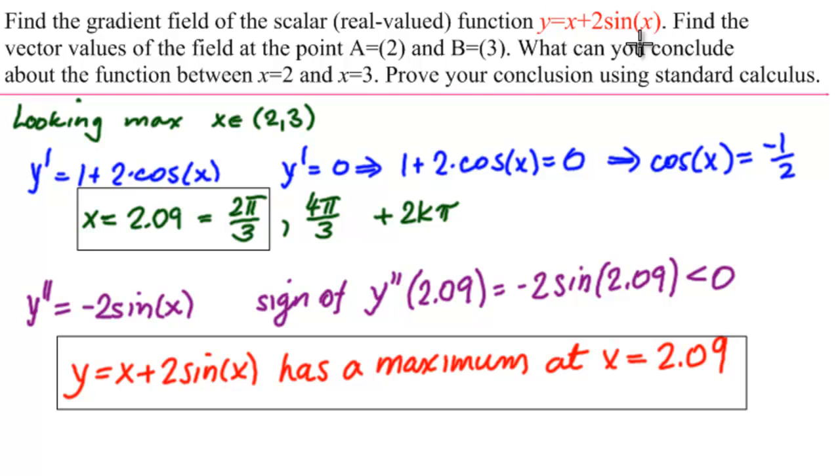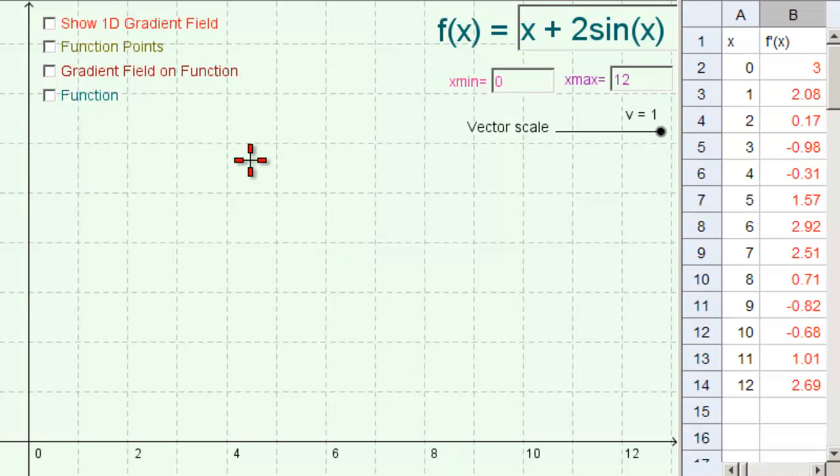So that was using standard calculus. We proved what we found from the gradient field. Now let's see the whole gradient field of this function. So here we have a little applet that will give us the one dimensional gradient field of a real valued function of one variable. Here we've set it up already to be our function, f of x equal to x plus 2 sine of x. The visible field is from x equal to 0 to x equal to 12. So that's what we set our minimum and our maximum. And momentarily, our vector is scaled at v equal to 1. So that's scaled at the actual magnitude. Over here we have a spreadsheet with x values from 0 to 12 at a step of 1. And over here we have the value of the derivative, or actually the part that was in front of i, on the gradient.